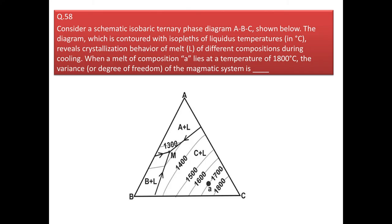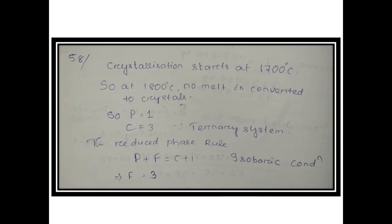Next question: consider the schematic isobaric ternary diagram controlled with isotherms (liquidus temperatures in °C) revealing the crystallization behavior of melt L at 1800°C. From the figure, crystal formation starts at 1700°C, so at 1800°C no melt is converted to crystals — there is only one phase (liquid). Phase = 1. Since it is a ternary system, C = 3. Applying the reduced phase rule (isobaric condition): P + F = C + 1. Solving gives degree of freedom = 3.